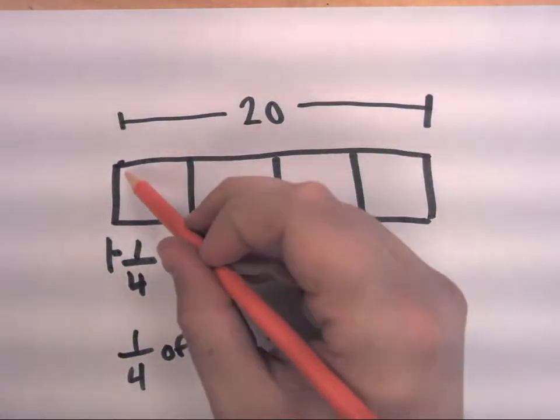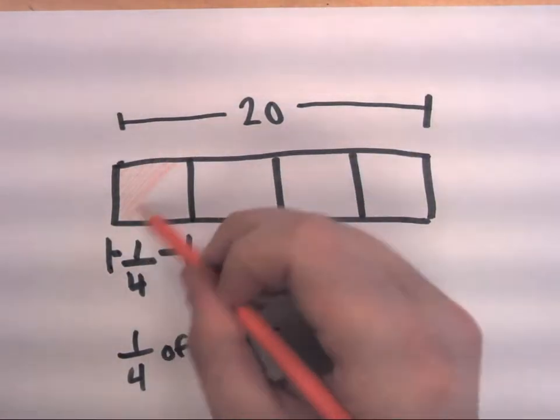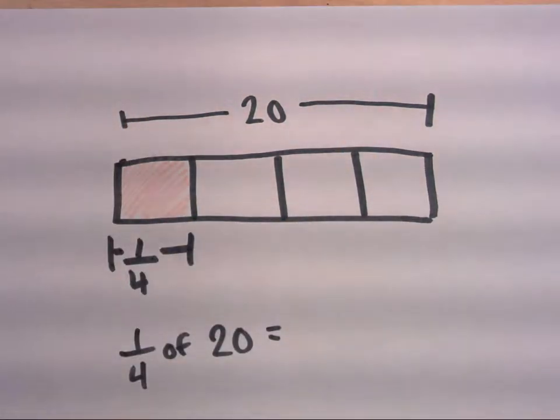And just so we're clear, 1/4 of 20 would be represented by this area right here. It's 1 piece out of 4. And remember that I said that each of these areas here is equal.